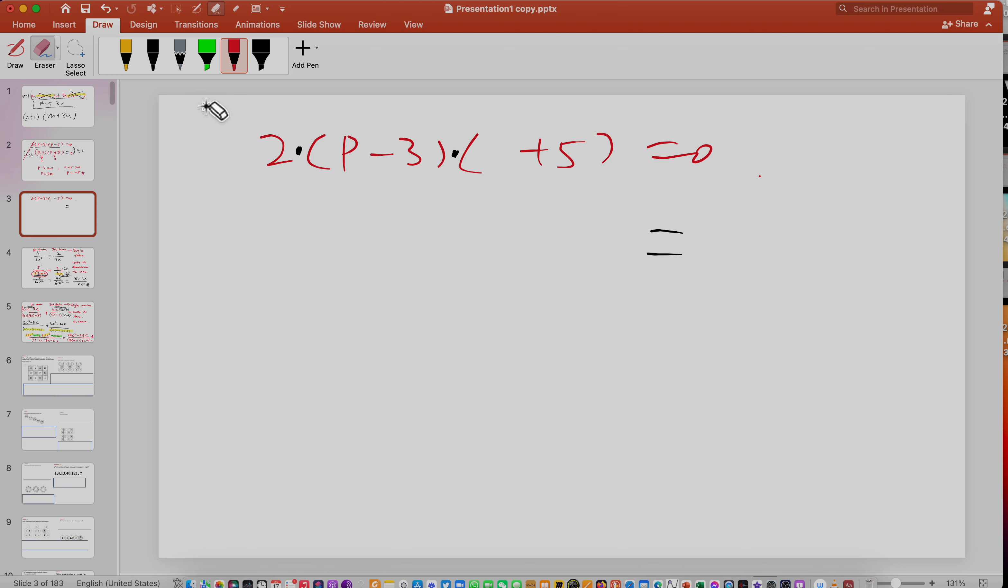So instead of getting rid of the two, right? What you have done is, you tried to multiply the two in. Correct. You can do it this way, but it's not necessary.